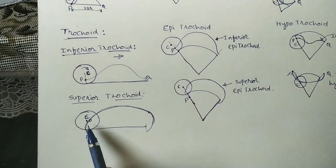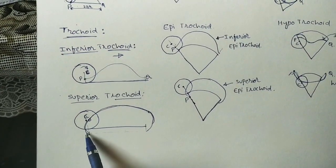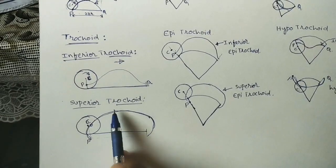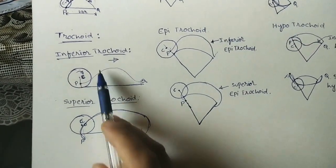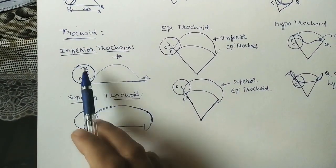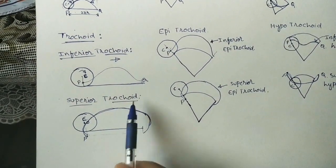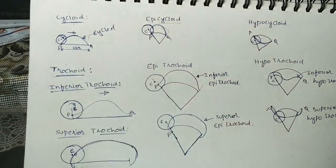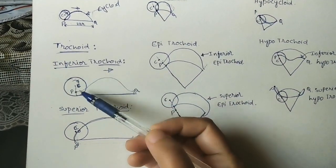If P is outside the circle, the path traced looks like this — this curve is also a trochoid, specifically called a superior trochoid. So we have two types: if P is inside the circle it is an inferior trochoid, if P is outside the circle it is a superior trochoid, and if P is on the circumference it is simply a cycloid.